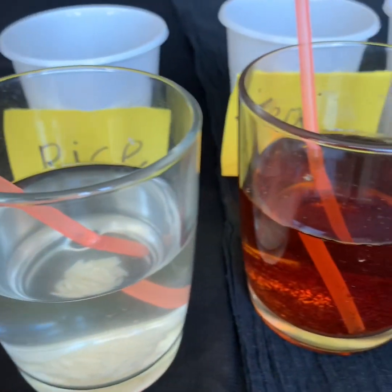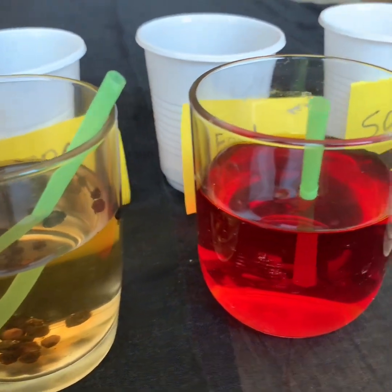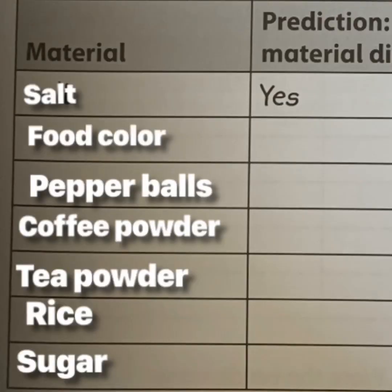If you want to take time, you can pause the video here and think about your answers — what will be your predictions? Now go to the prediction column in your worksheet and put your predictions there. I have shown you an example for salt: I feel the salt will dissolve completely, so I have put 'yes.' Predictions are nothing but your opinions before you end up with the results.